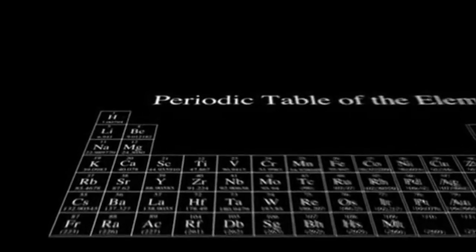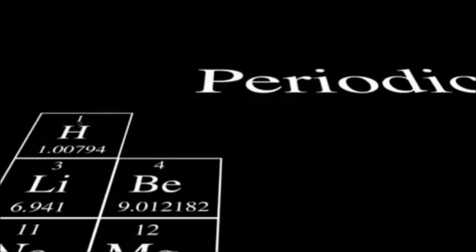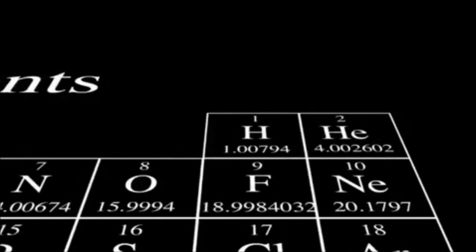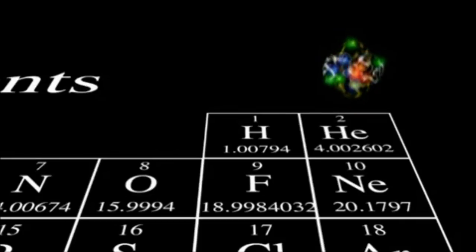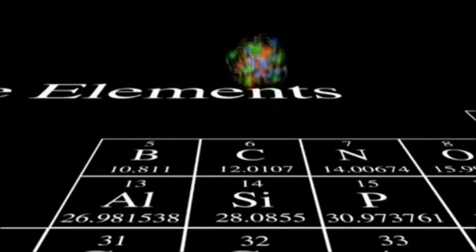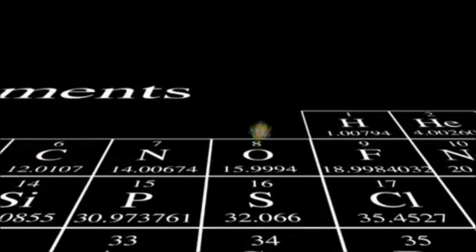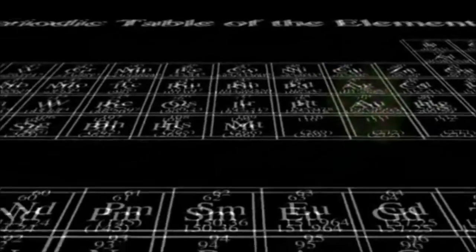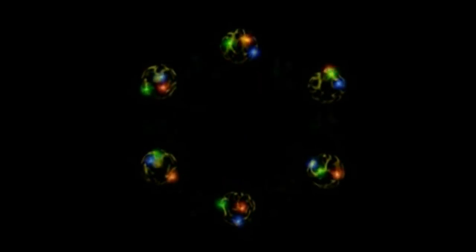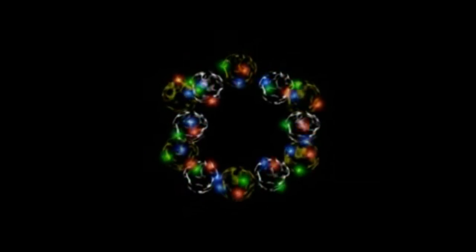These protons and neutrons can then combine to form the nucleus of each element in the periodic table. One proton in the nucleus makes hydrogen. Two form helium. Six, carbon. Eight, oxygen. Seventy-nine is gold. And ninety-two, uranium. Neutrons help hold the protons together — because of their electric charge, protons would repel each other more strongly if neutrons were not present, and the heavier elements would come apart. There are approximately as many neutrons in each element as there are protons.